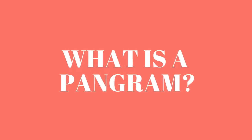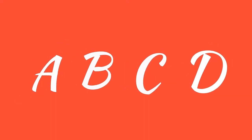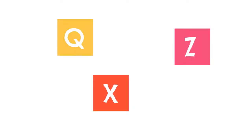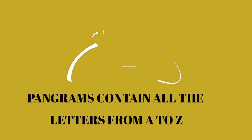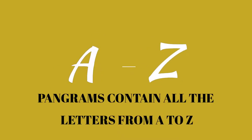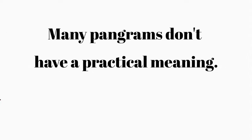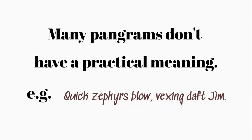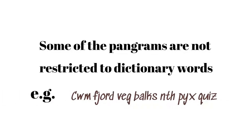So, what is a pangram? The English language has 26 letters, and these 26 letters are used to make all sentences. But half of the letters are not widely used in common words. Pangrams are a particular sequence of words that contain all the alphabets — a sentence that contains all the alphabets at least once. In simple words, pangrams contain all the letters from A to Z. Not all pangrams need to make sense; many don't have a practical meaning, and some are not even restricted to dictionary words.